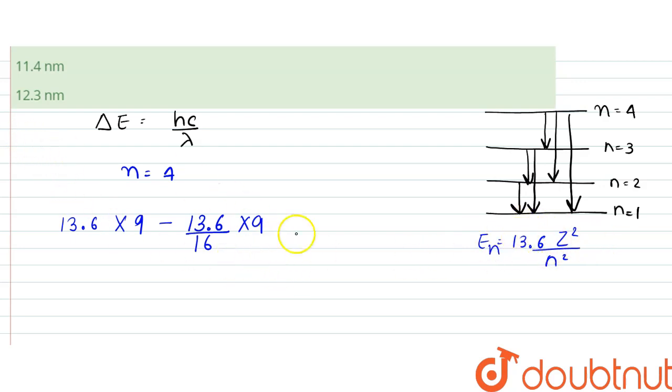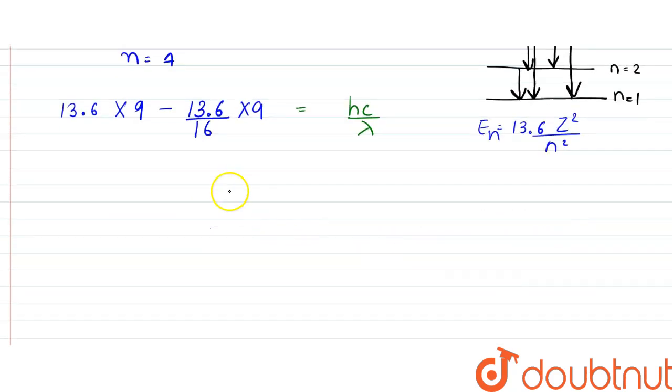So, from here, this would be equal to hc by lambda. So, here, since this value is in electron volts,